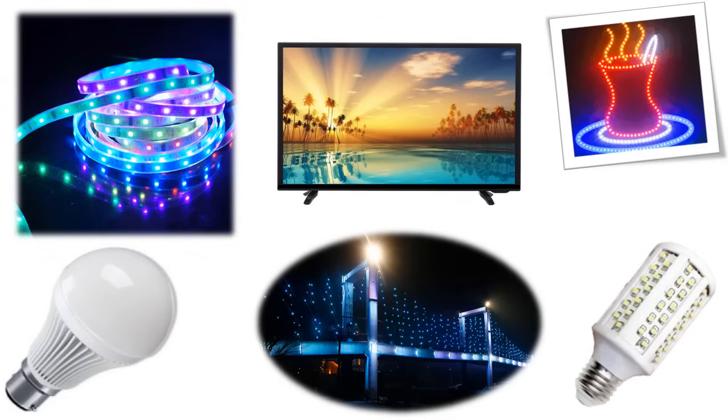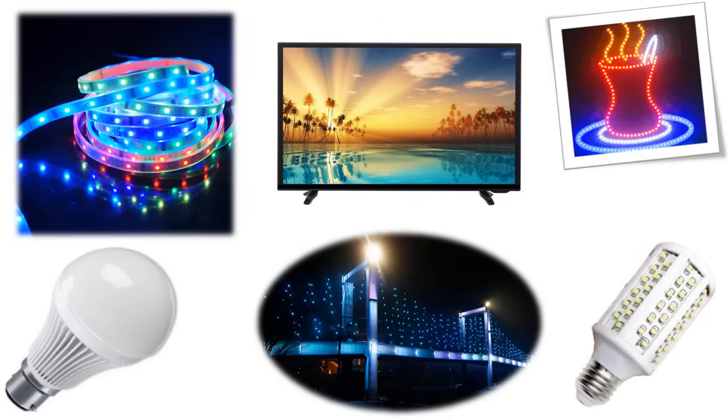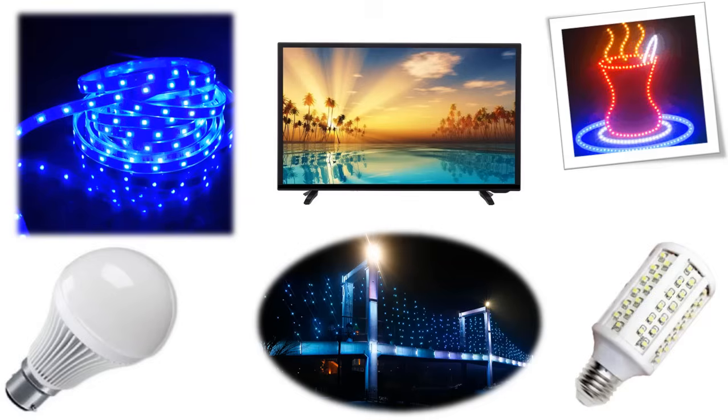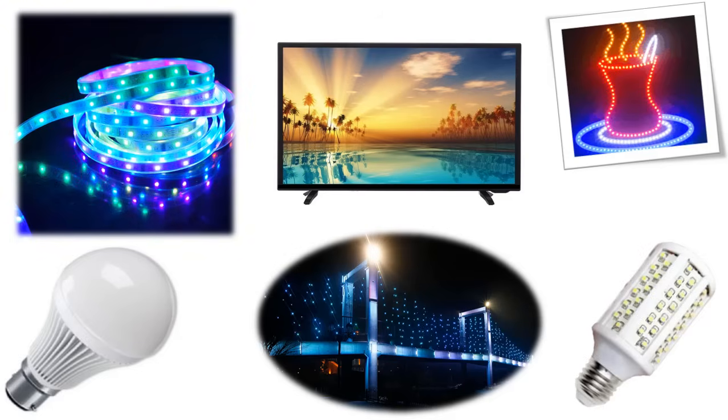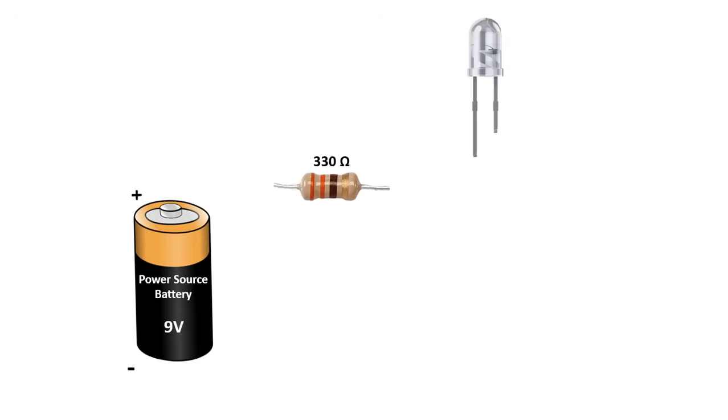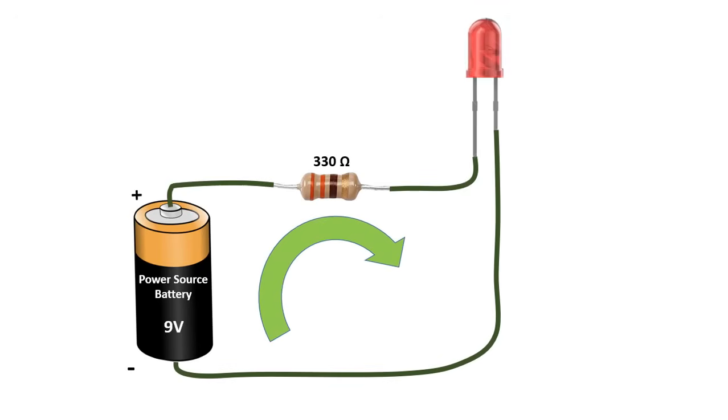There are typically two indicators to let you know what direction electricity will pass through an LED. The first indicator that the LED will have is a longer positive lead anode and a shorter ground lead cathode. The other indicator is a flat notch on the side of the LED to indicate the positive anode lead. Like all diodes, LEDs create a voltage drop in the circuit, but typically do not add much resistance.